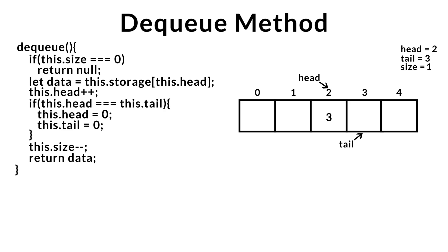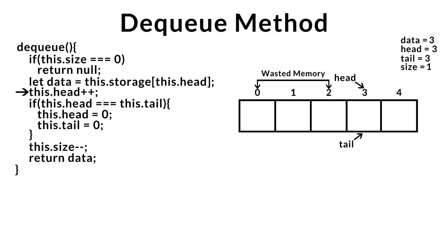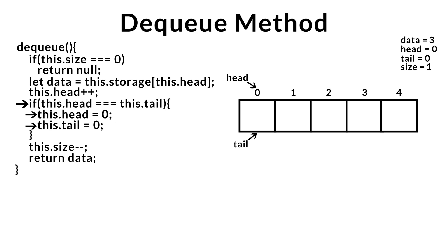Last example — executing our DQ method once more. First, we check if our queue is empty — it's not. We store the data from the front of the queue, then remove it by incrementing the head index. Here comes the fun part: we have wasted memory — indices 0, 1, and 2 are currently being wasted. We check if the head and tail indices are equal — in this case, they are. So we save memory by resetting our head and tail indices to zero. We then decrement our size and return the data.